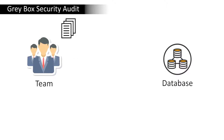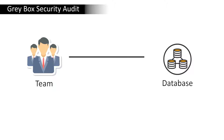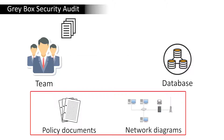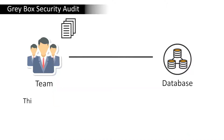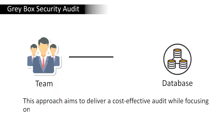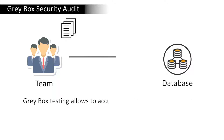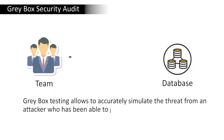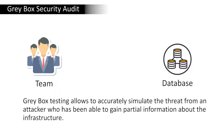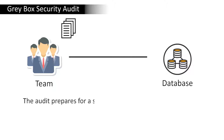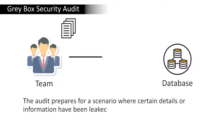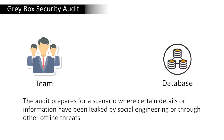In a grey box security audit, the team is given partial information about the target environment, such as what could be identified by a motivated attacker. Documents provided may include policy documents, network diagrams, and other vulnerable information. This approach aims to deliver a cost-effective audit while focusing on areas important to the organization, simulating a threat from an attacker who has gained partial information through social engineering or other offline threats.